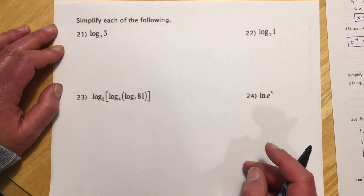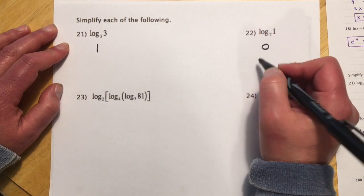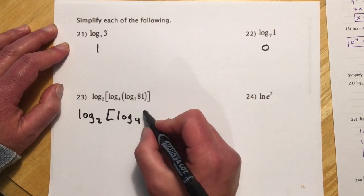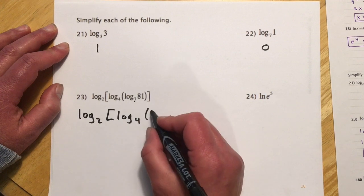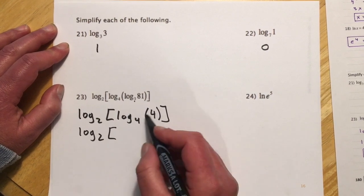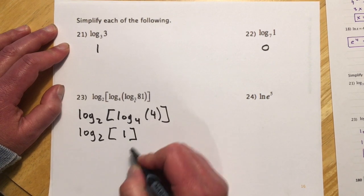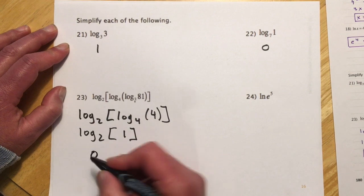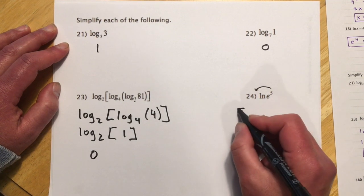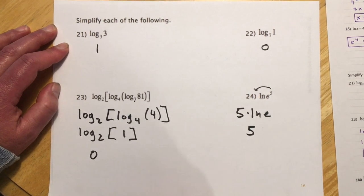Now the simplify round for match problems. Log base 3 of 3 — what power do I raise 3 to get 3? Just 1. Log base 7 of 1 — what power do I raise 7 to get 1? That's 0. Log base 3 of 81 — what power do I raise 3 to get 81? That's 4. Log base 4 of 4 equals 1. Log base 2 of 1 equals 0. And for number 24 with an exponent, bring the 5 down front and use ln e equals 1, so the answer is just 5.